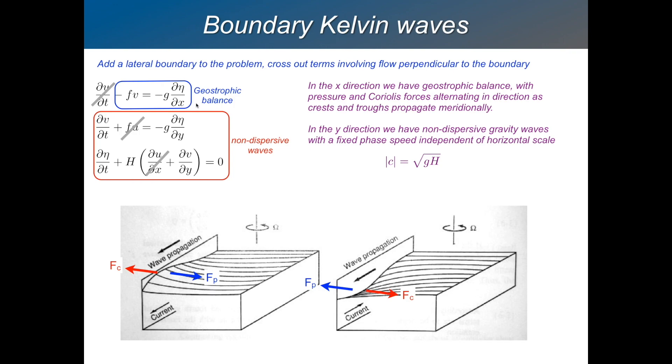So how does that work? Well, we're up against a wall here. And if the fluid is heaped up against the wall, then the pressure gradient force will be pushing out into the fluid. And the Coriolis force presumably will be balancing that. So what we've got there is southward flow. On the other hand, if there's a dip against the wall, pressure gradient force is pushing you towards the wall and the Coriolis force is balancing that. So you've got northward flow. So you've got these oscillations between northward and southward flow as you get these crests and troughs up against the wall.